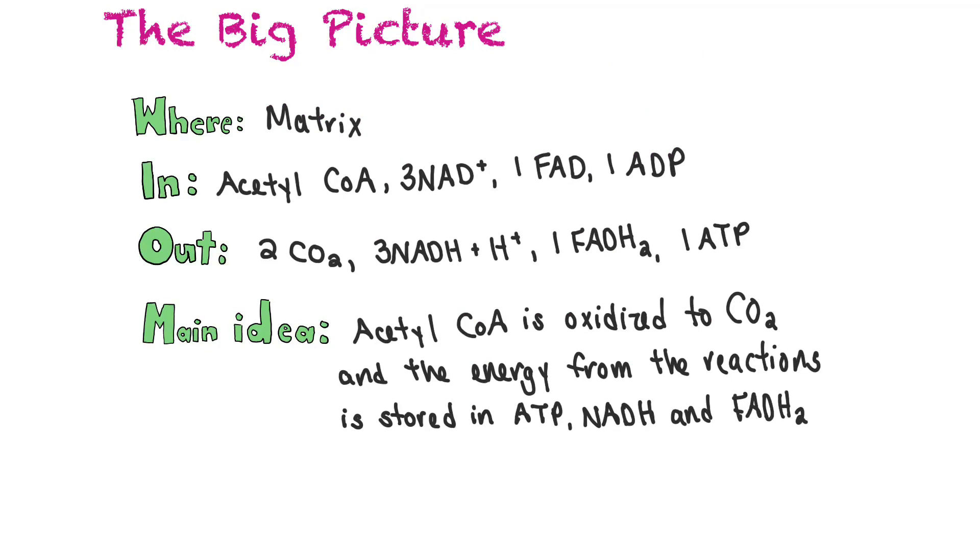First we'll look at the big picture. The where is the matrix. Just like the link reaction, this reaction takes place in the matrix of the mitochondrion. That's because some places you won't even see the link reaction as an actual stage of cellular respiration. It's just kind of like an intermediate step so it gets ignored sometimes, but we will look at it as two processes. The link reaction and the Krebs cycle happen hand in hand so they're in the same place.